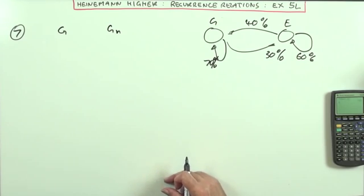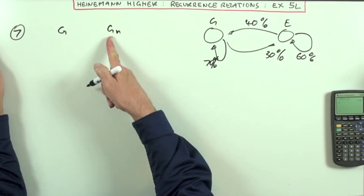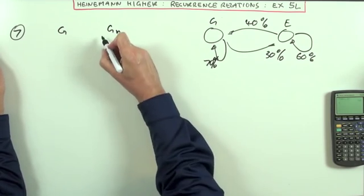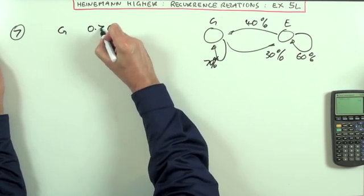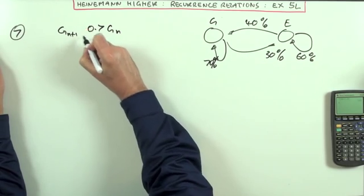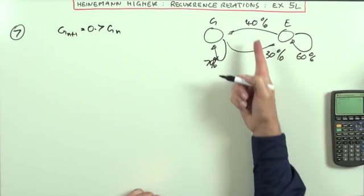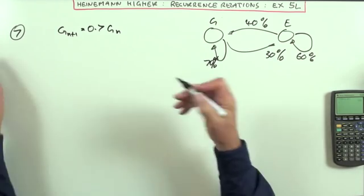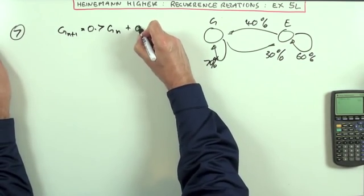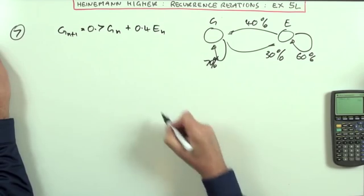then of the cars that you started with, you're only going to get 70% back. So the following week, you'll just have 70% of them, but you'll also be getting 40% of Edinburgh's ones. So plus 0.4 times the Edinburgh cars.